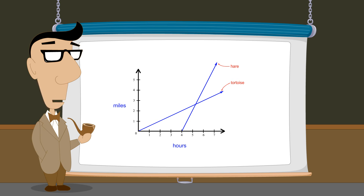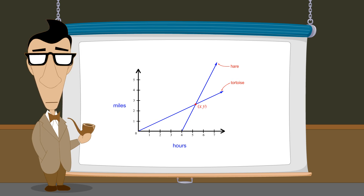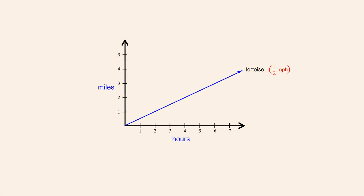If we can create equations for these two graphs, there are mathematical techniques which we can use to determine the coordinates of the point where the two graphs intersect. Knowing these coordinates, we can determine the exact time and place where the tortoise and the hare meet. To create an equation for the tortoise's distance as a function of time, let's use the variable x to represent the time coordinate and y to represent the distance coordinate.